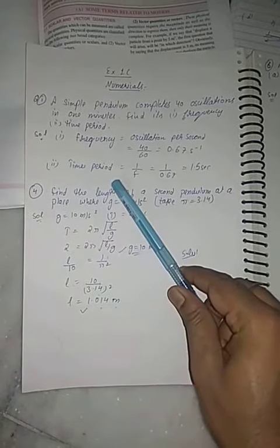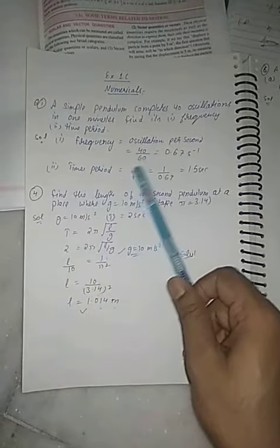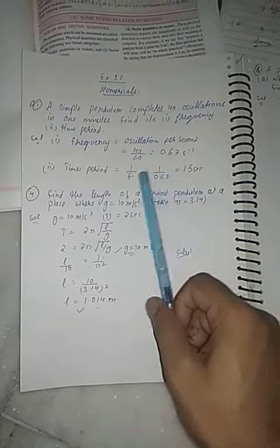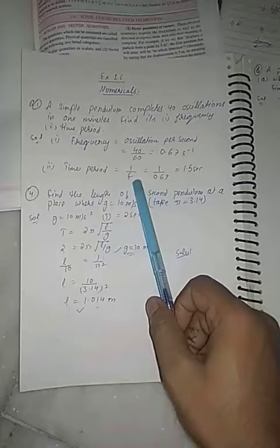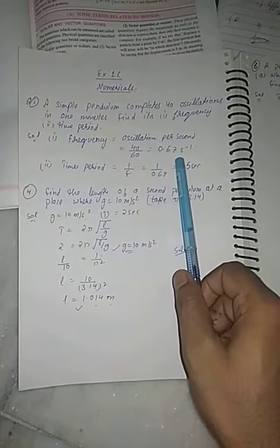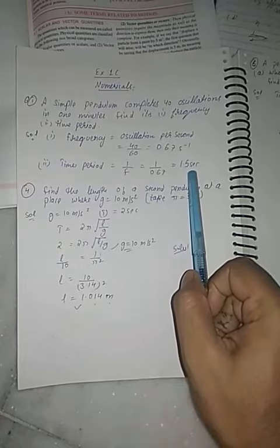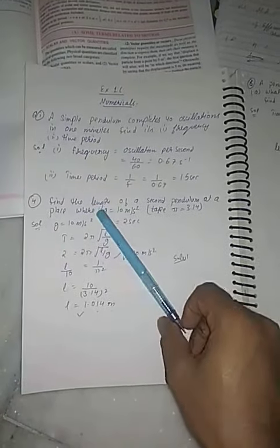Now the second part is time period equals 1 upon f, where f is frequency which we have already calculated in the first part. 1 upon 0.67 equals 1.5 seconds. Now numerical number four.